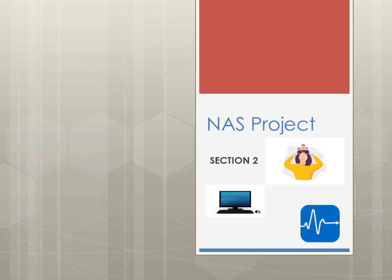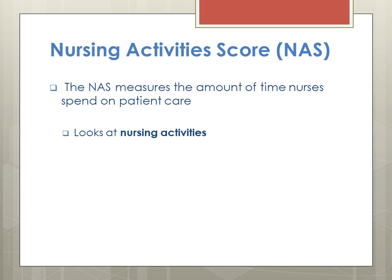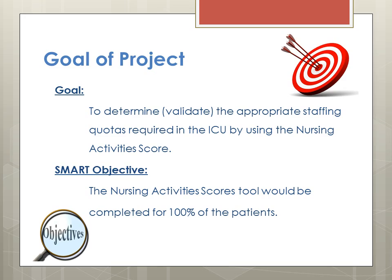In this part of the presentation, we will be reviewing how to actually get onto the Nursing Activity Scores on vSign. The NAS measures the amount of time nurses spend on patient care, whether it is direct care or indirect care. The goal of the project is to validate the appropriate staffing quotas in the ICU by using the Nursing Activity Scores, and the NAS tool will be completed for 100% of the patients.